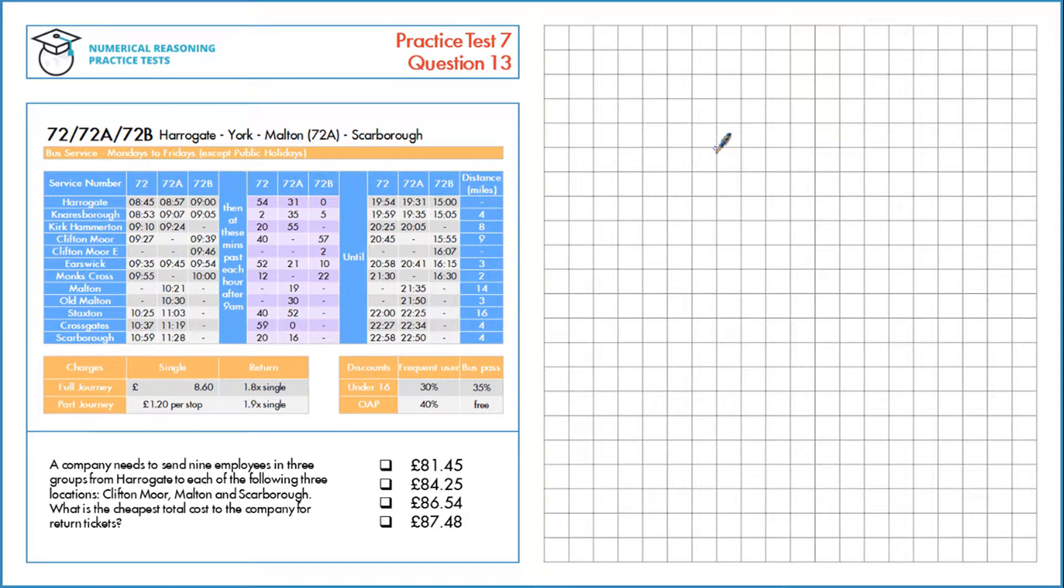A company needs to send nine employees in three groups from Harrogate to each of the following three locations: Clifton Moor, Moulton, and Scarborough. What is the cheapest total cost to the company for return tickets?